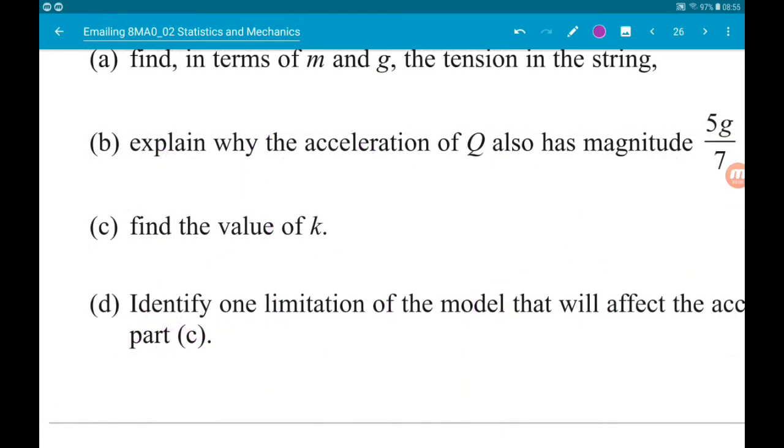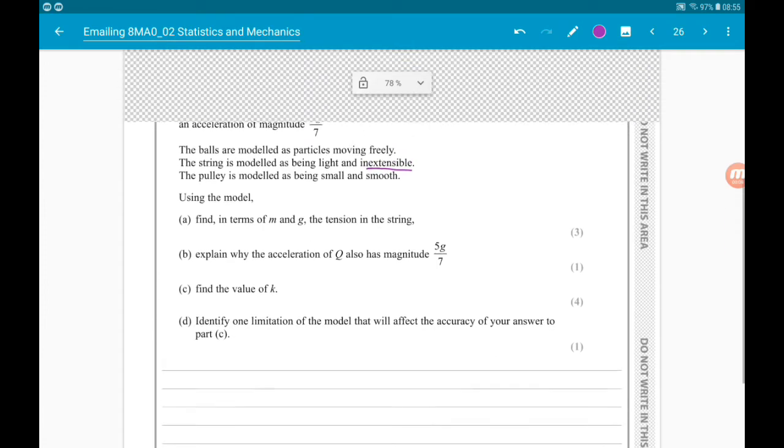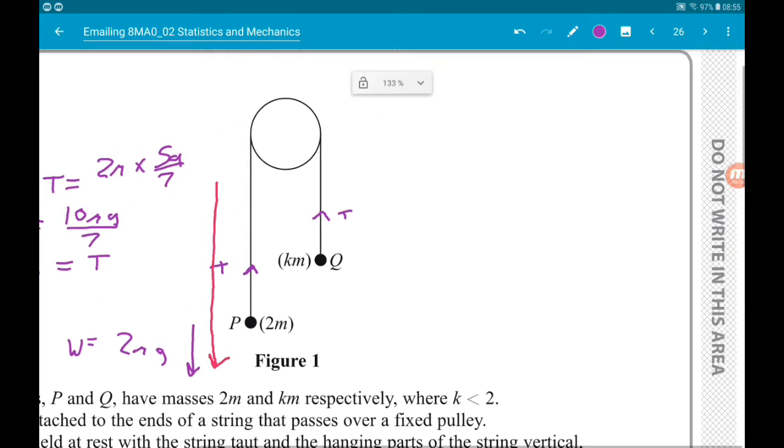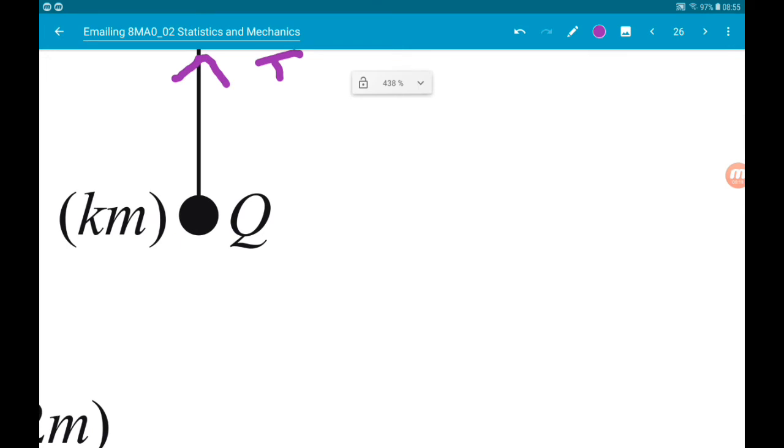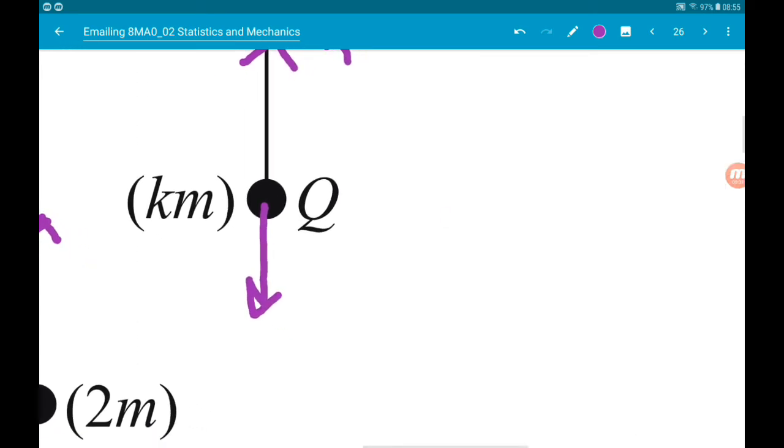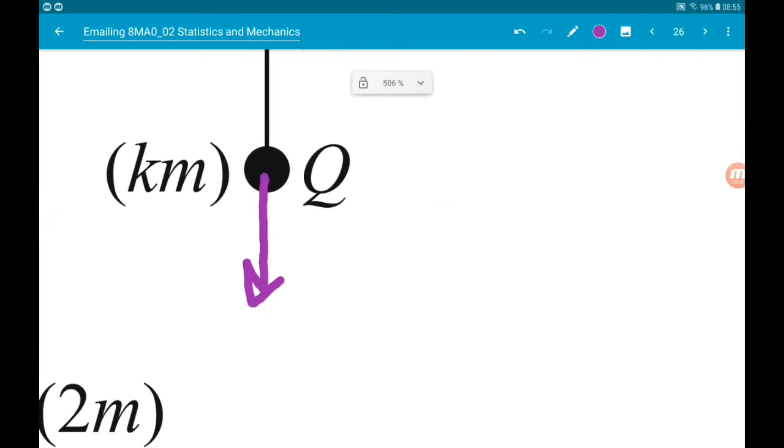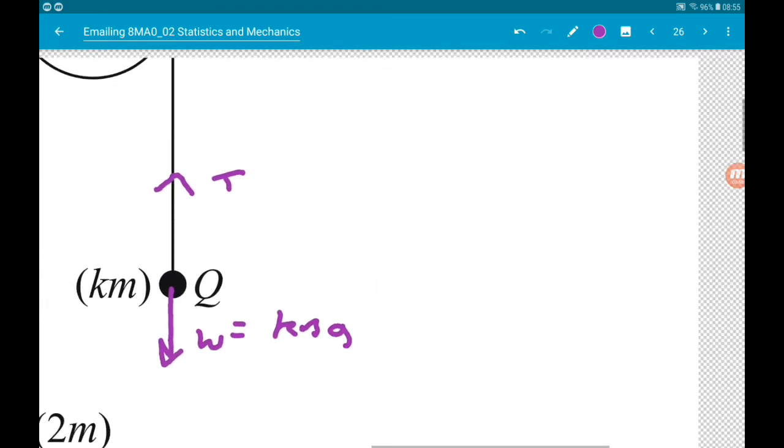Okay, part C wants us to find the value of K. So what we're going to do is the same on the right as we just did on the left. So we got tension acting up through the string. We've got weight trying to pull Q down. So the weight is mass times gravity. So weight here is KMG.